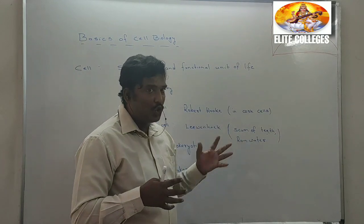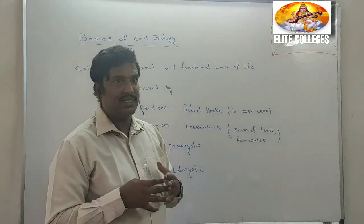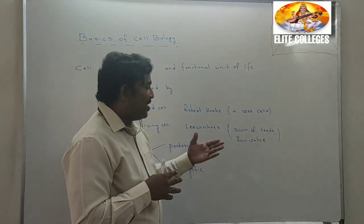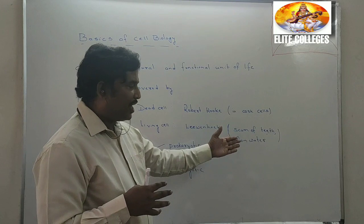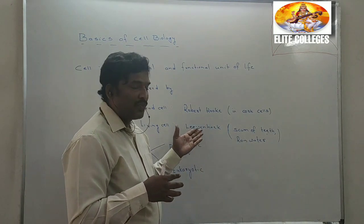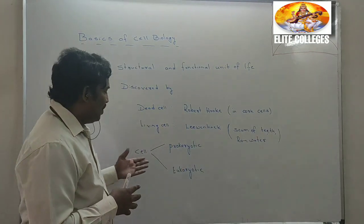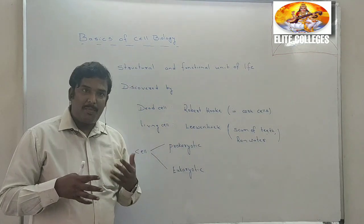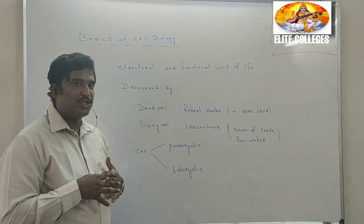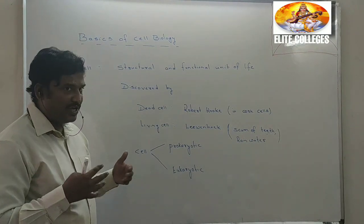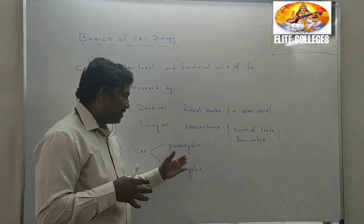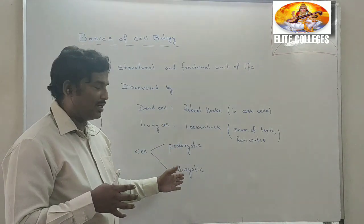He also observed stored rain water — not exactly rain water since rain water is pure — but the stored rain water. He observed that some living cells are present in it. Based on the composition of the cell, we classify cells in two ways: prokaryotic cells and eukaryotic cells.